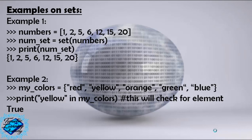Example number 2: my_colors equals open curly bracket red, yellow, orange, green, blue close curly bracket. Print yellow in my_colors. This will check for element so we will get True.